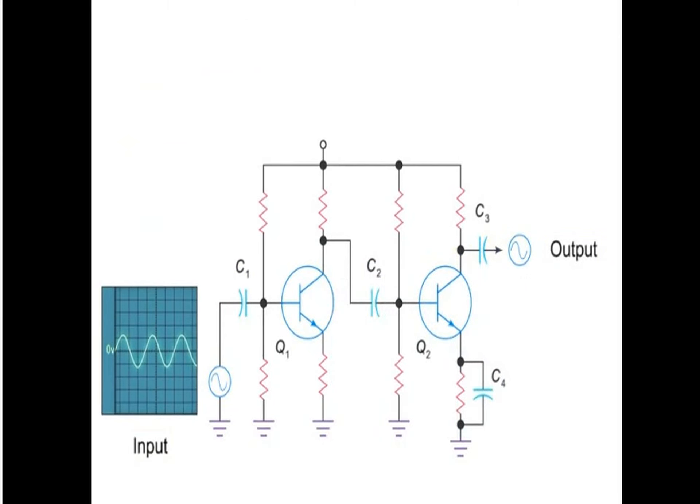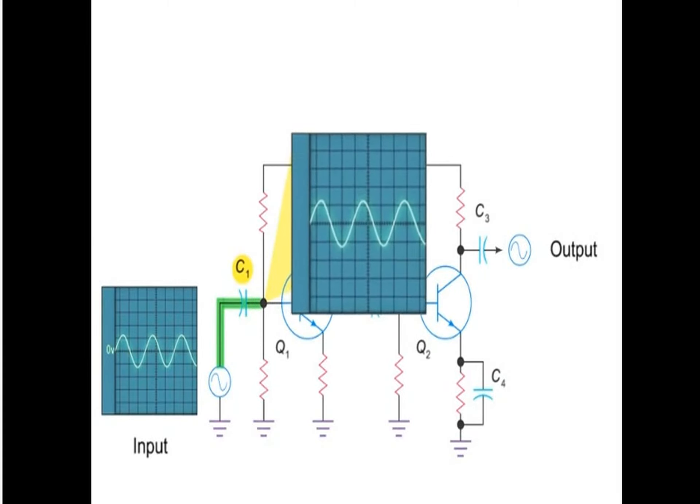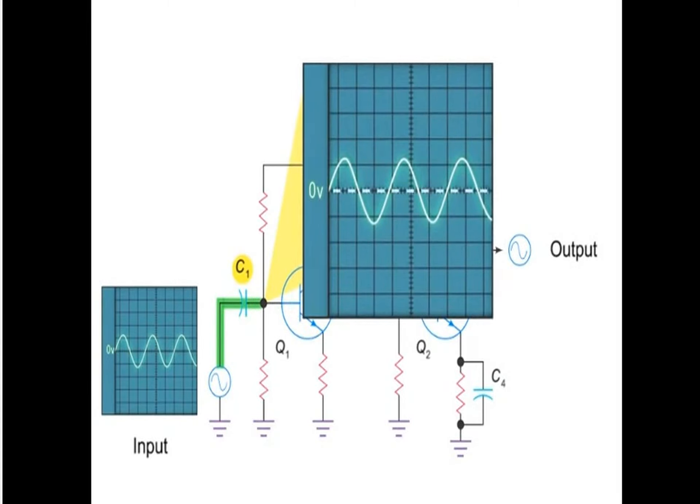The amplifying process begins with the input of an AC signal. Upon entering the amplifier, the signal passes through an initial coupling capacitor, C1, which will strip it of any DC voltage. However, entering the circuit will add a small DC value of 1.8 volts.